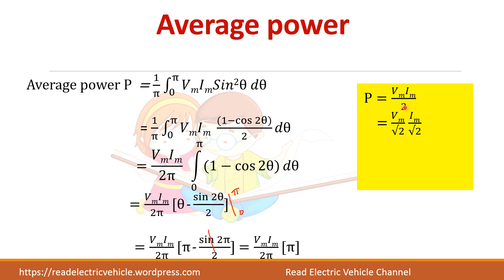We can write Vm × Im / 2 as (Vm / √2) × (Im / √2), splitting the 2 into √2 × √2. Vm / √2 is Vrms and Im / √2 is Irms. So the average power in a pure resistive circuit is P = Vrms × Irms.